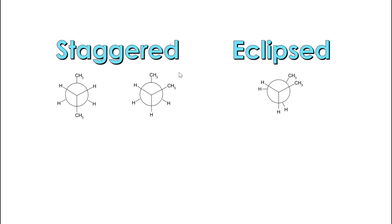Here we've got another example of a staggered Newman projection. Contrast these two to the eclipsed Newman projection, where you can see the groups that are attached to the front carbon are directly in front of the groups attached to the back carbon.